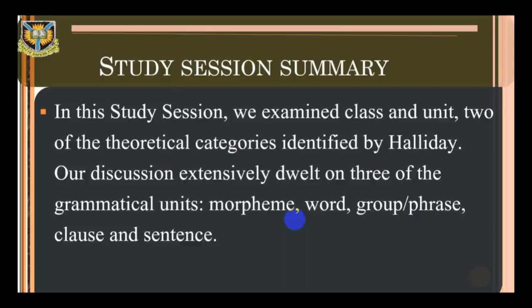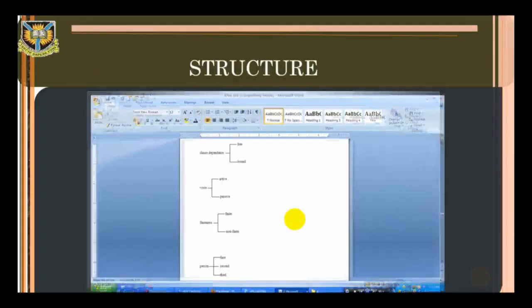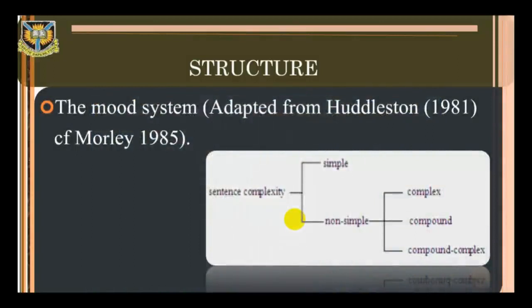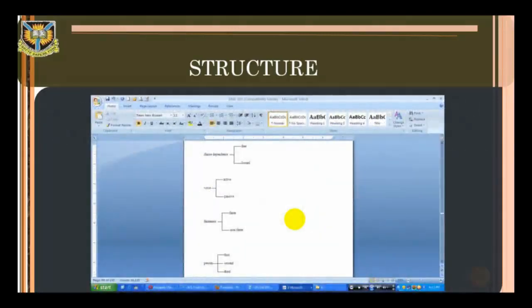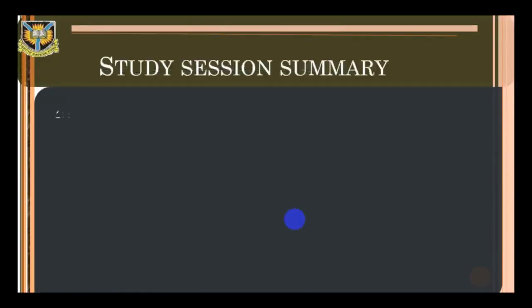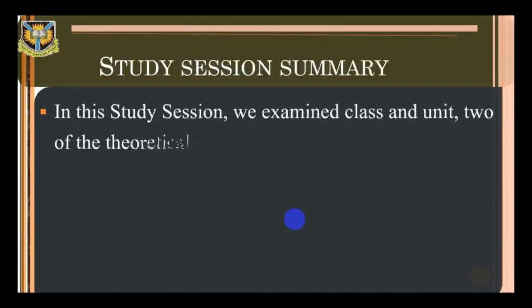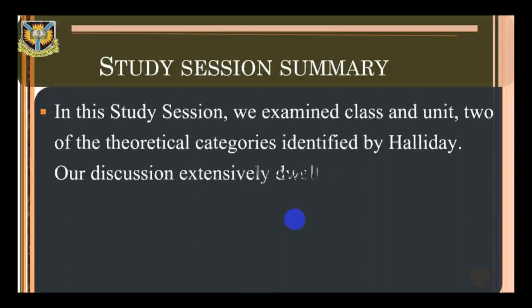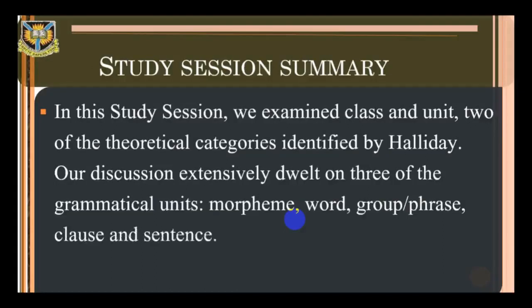Under the imperative non-jussive you have votive and optative. The mood system is adopted from Huddleston 1984, as cited in Mowley 1985. Sentence complexity: you have the simple and non-simple. Under the non-simple you have the complex, the compound, and the compound-complex sentence. You also have clause dependence, which has under it the free and the bound. You have voice, which has under it the active and the passive voice. Finiteness: you have the finite and non-finite. Person: you have first, second, and third.